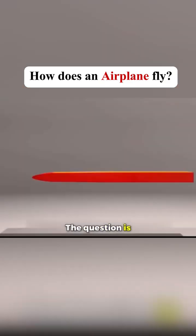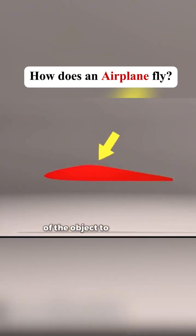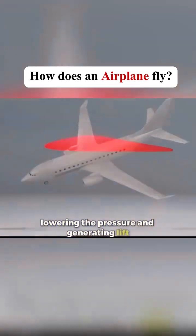The question is, how to make the air move faster above? We can design the upper surface of the object to be curved. This shape makes the airflow path longer above than below. As a result, the air moves faster above, lowering the pressure and generating lift.